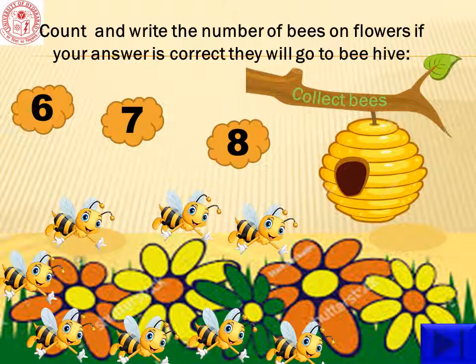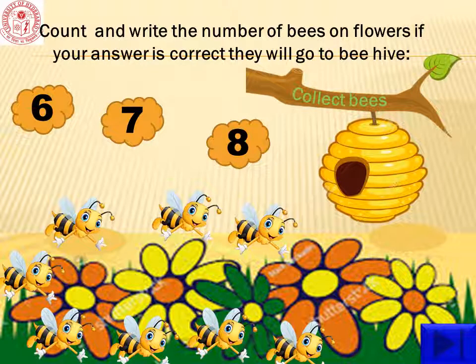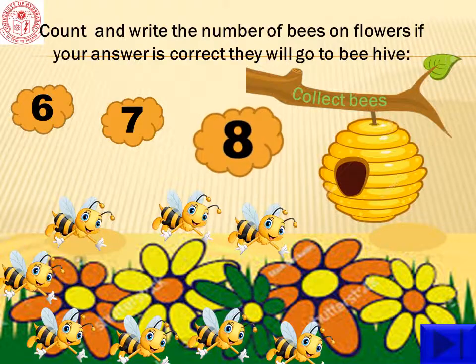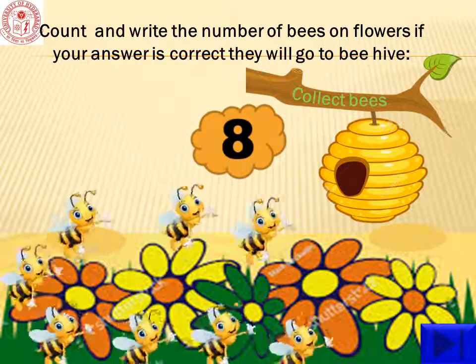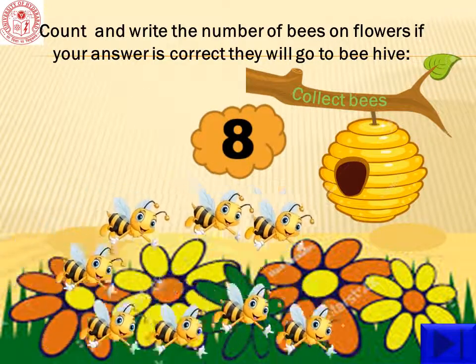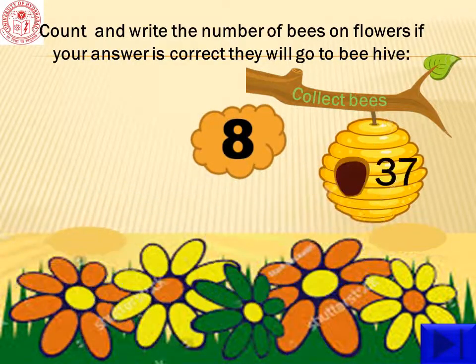Children, are you ready to count how many bees are there on the flowers? Come on, let us start. One, two, three, four, five, six, seven, eight. Yes, there are eight bees. Click on number eight. These bees are flying into the beehive.